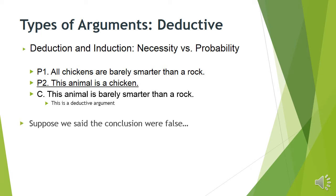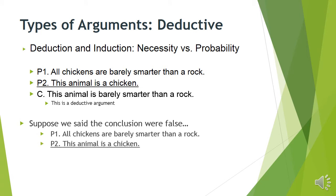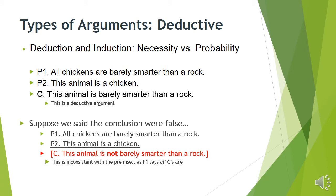Now, suppose the conclusion is false — then we've got to do something to the argument; we've got to shift it in a big way. If the conclusion is false, there's no way that squares with what's already accepted in premise one and two. If I accept that all chickens are barely smarter than a rock, and this animal is a chicken, it would be weird to then accept that this animal is not barely smarter than a rock — that's inconsistent. If I'm going to accept that, I should change the premise to say not 'all' but instead 'most.'